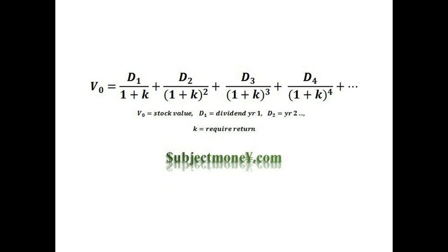This doesn't mean that a dividend discount model ignores capital gains. The main point is that by using the dividend discount model, we are simply discounting all the future cash flows that we expect to receive from the stock. These future cash flows are the dividends and the sale price of the stock. The only reason why this equation does not show the sale price of the stock is because the future sale price itself is derived from the future dividends.